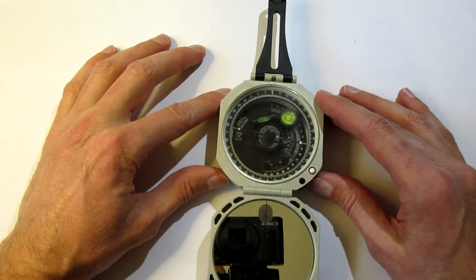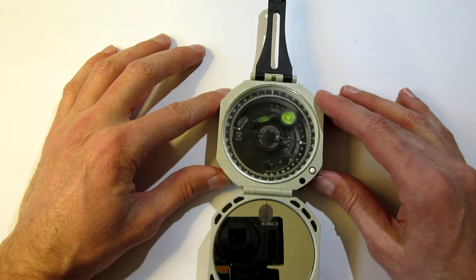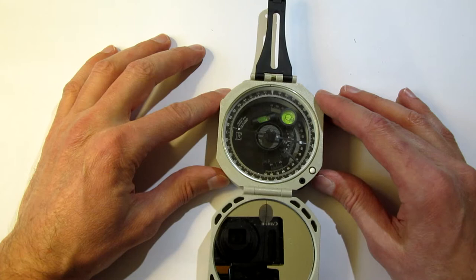The Brunton can do a couple things for us. It can measure orientation with respect to magnetic north, which we can then correct back to geographic north. And then, it can also measure the orientation from horizontal.